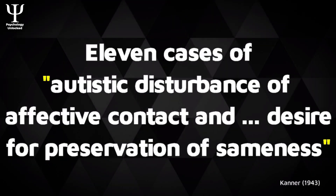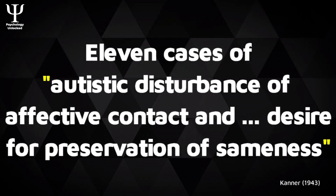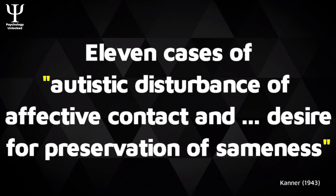Autism is a really complicated subject. The term was introduced in 1943 by Leo Kanner, who wrote an article about 11 cases of what he called autistic disturbance of affective contact and desire for preservation of sameness. All these years later, Kanner's original observations still form the basis for the classification of autism today.